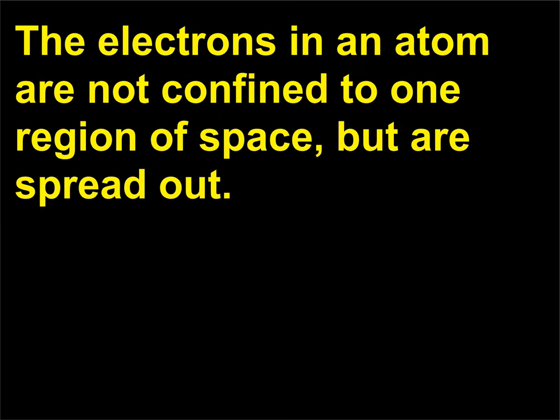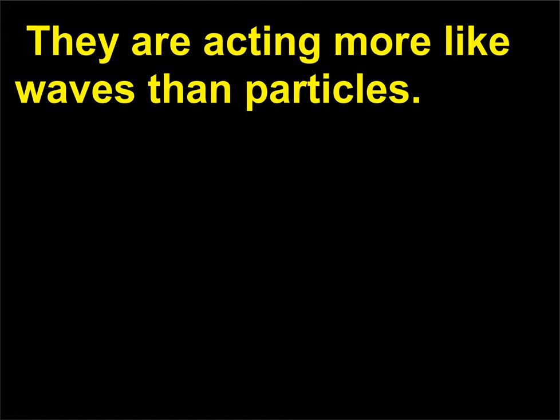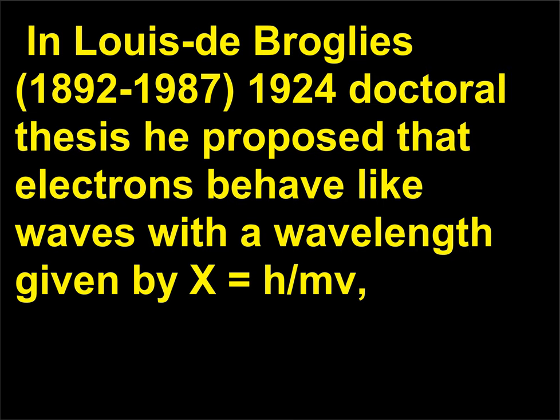The electrons in an atom are not confined to one region of space, but are spread out, acting more like waves than particles. In Louis de Broglie's 1924 doctoral thesis (1892–1987), he proposed that electrons behave like waves with a wavelength given by λ = h/mv.